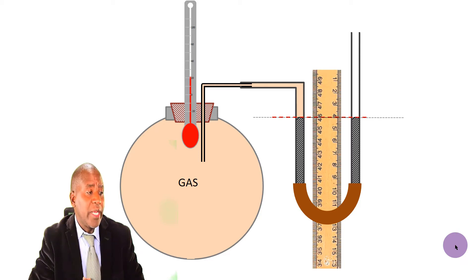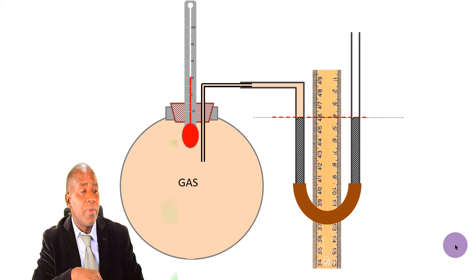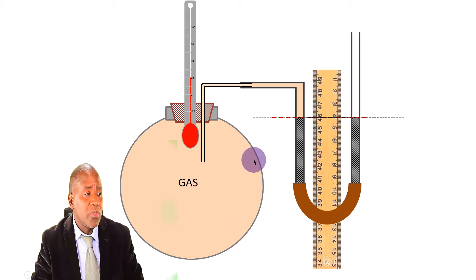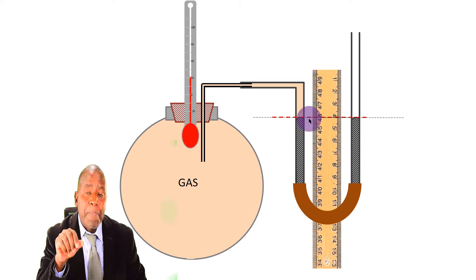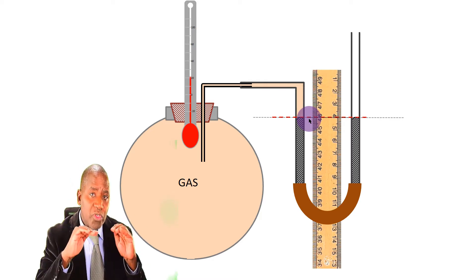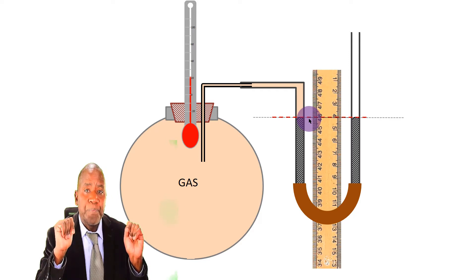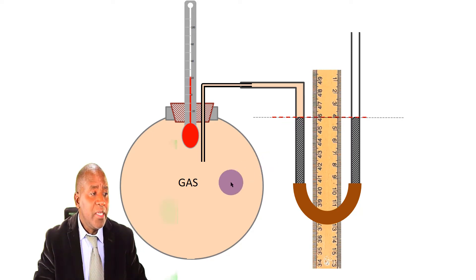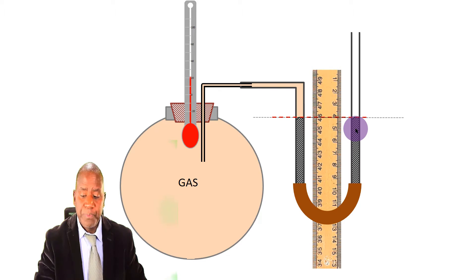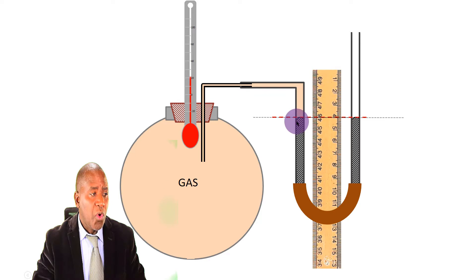So with me over here I've got a round-bottom flask and it's connected using a rubber tubing to the U-tube, and the U-tube has mercury in it. When you look at the two levels, you find that the two levels of mercury in the two arms of the U-tube are the same — the two surfaces are on the same level. When you see that the two levels of the liquid are on the same horizontal level, it tells you that the pressure exerted on each one of those surfaces is the same, provided the liquid is continuous and connected as in the U-tube.